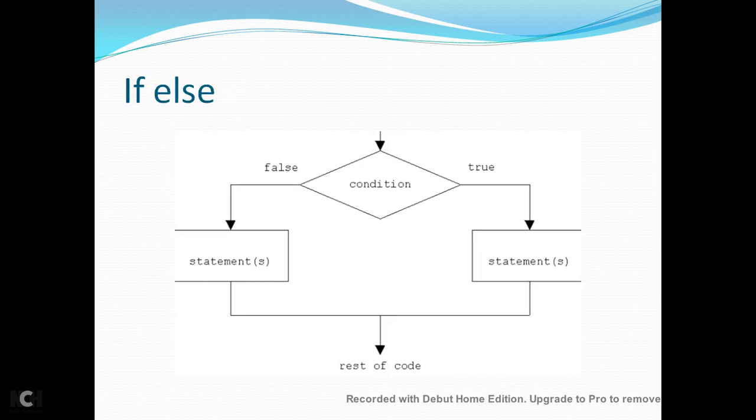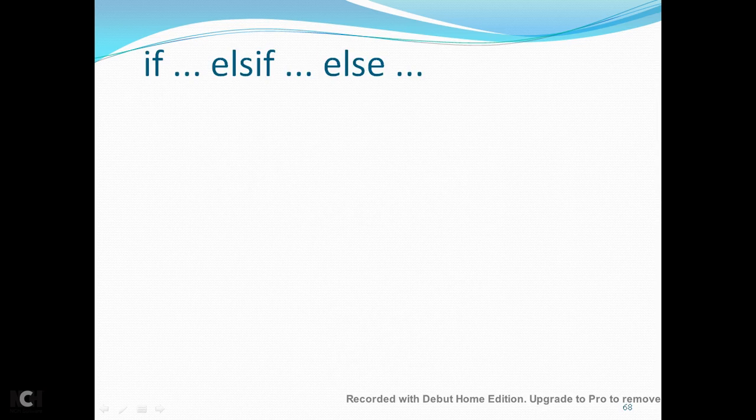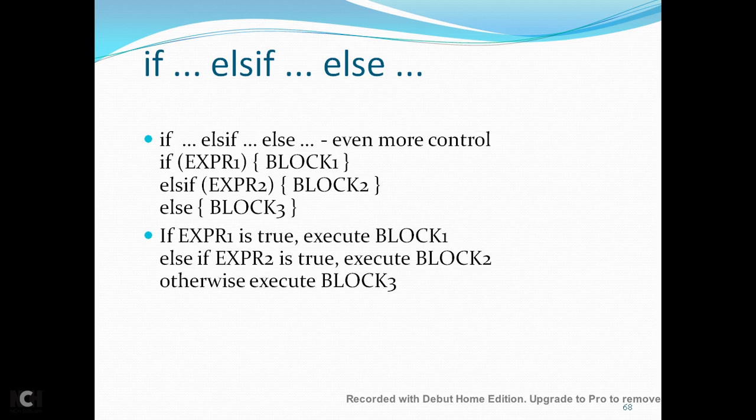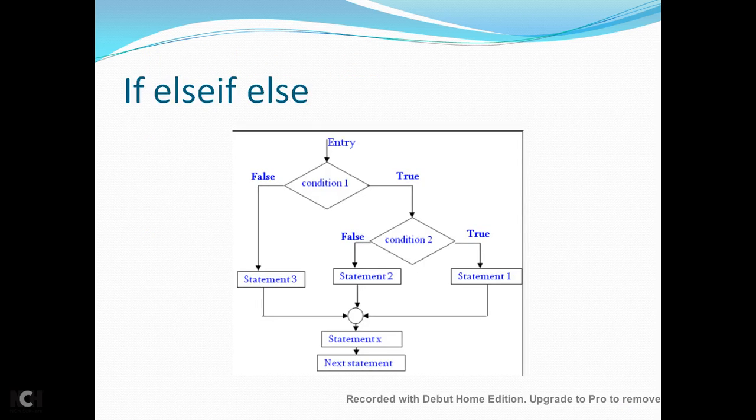Then if else, if else, if the flowchart is like this: if the condition is true, then execute the statement. If the condition is false, then check the statement, then it comes out of the loop. If else if else means even more control. Expression 1 is true, then execute block 1, else if expression 2 is true, block 2, then else block 3.